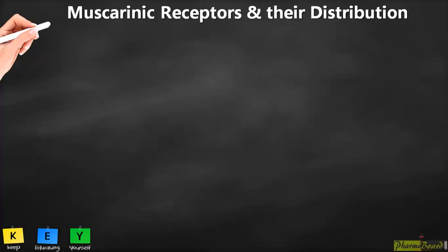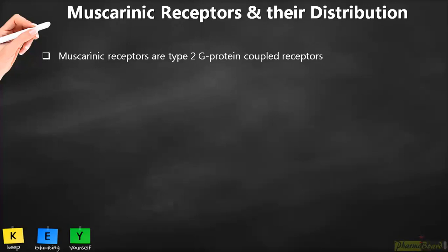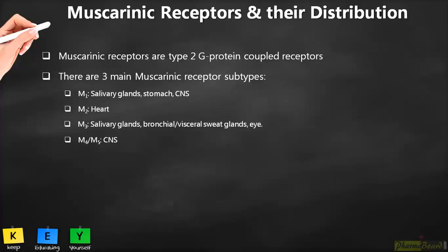Muscarinic receptors are a major class of cholinergic receptors, widely distributed in the human body and classified as G-protein coupled receptors. There are five subtypes: M1, M2, M3, M4, and M5. The first three — M1, M2, and M3 — are highly important as they carry out numerous functions in the body.